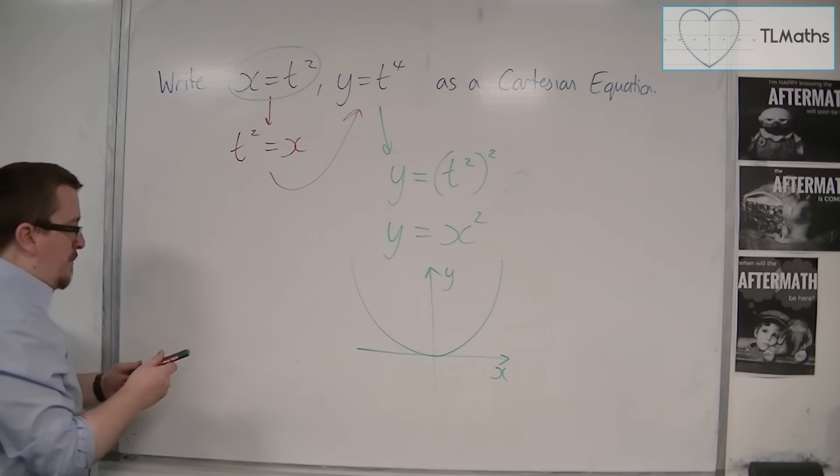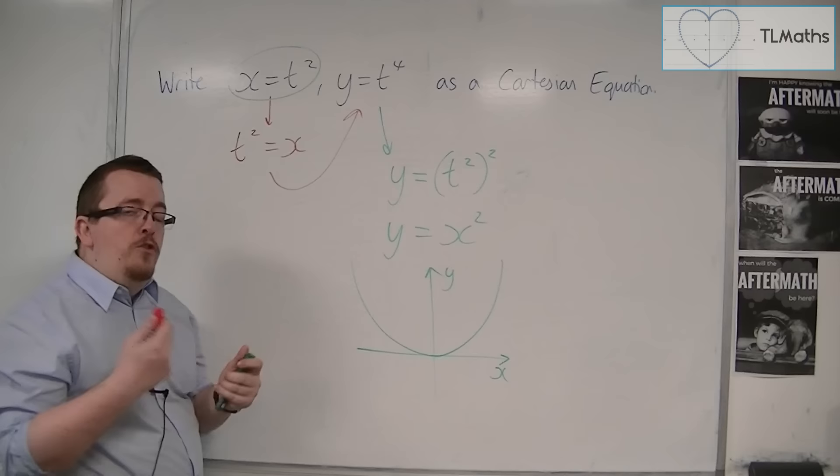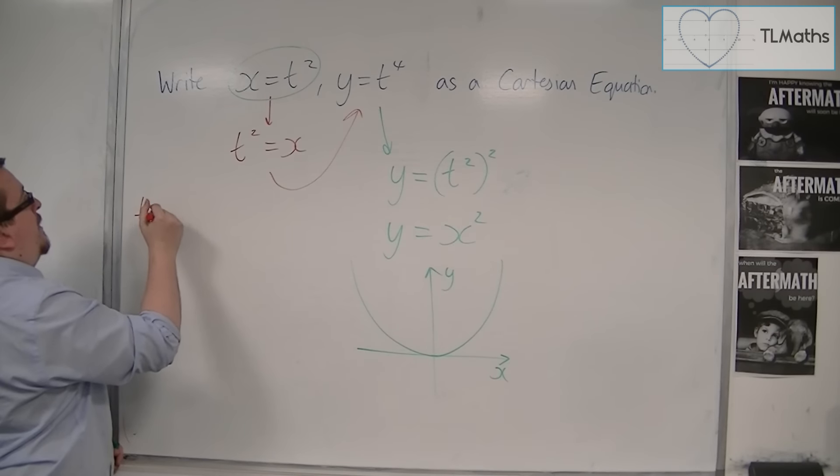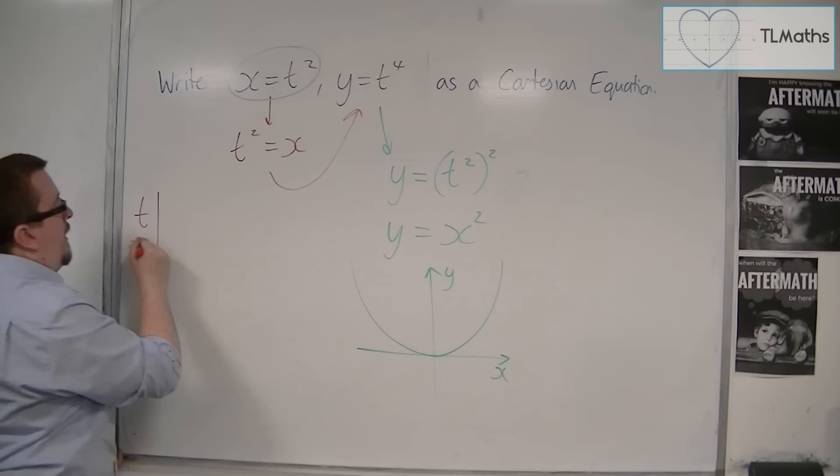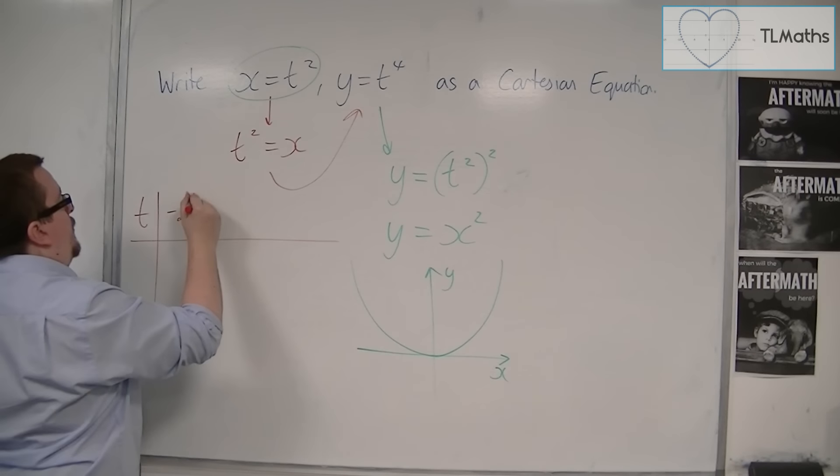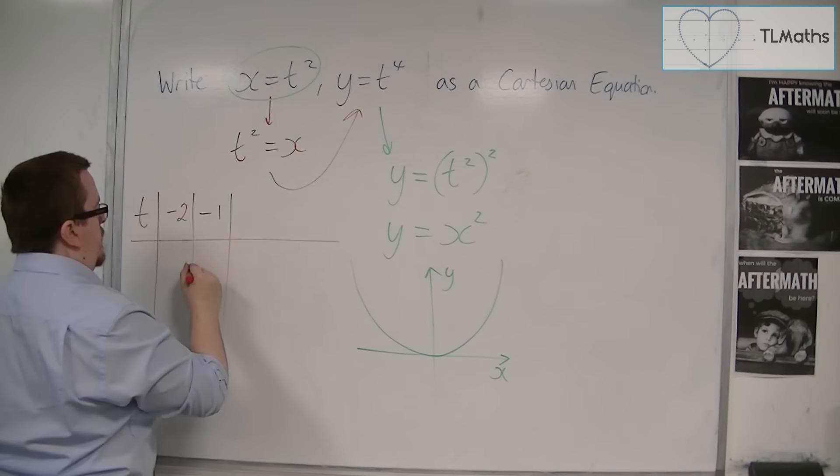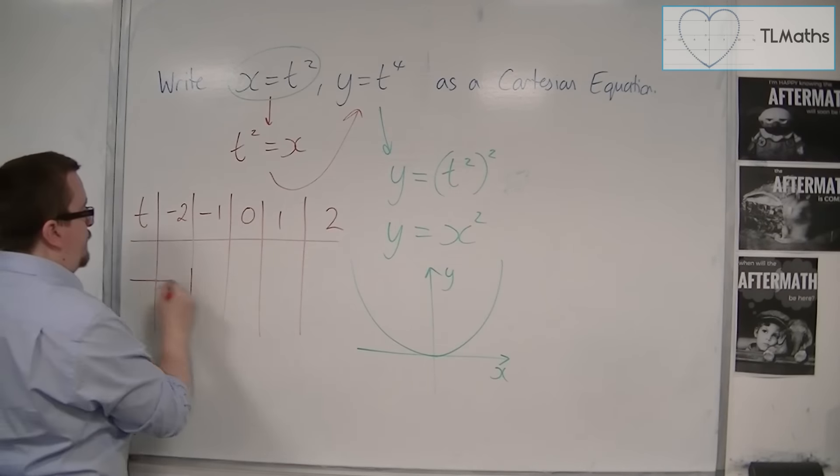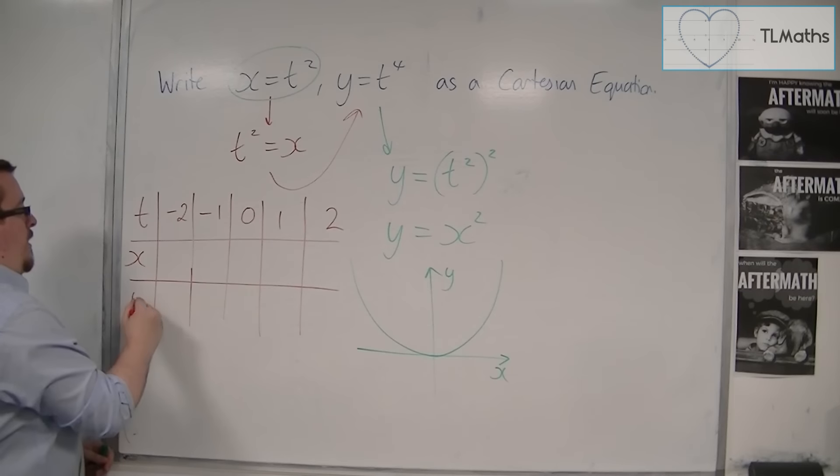It becomes a little bit more apparent if you draw out a short table looking at particular values. So, if I looked at minus 2, minus 1, 0, 1, and 2, and I got my x and y values.